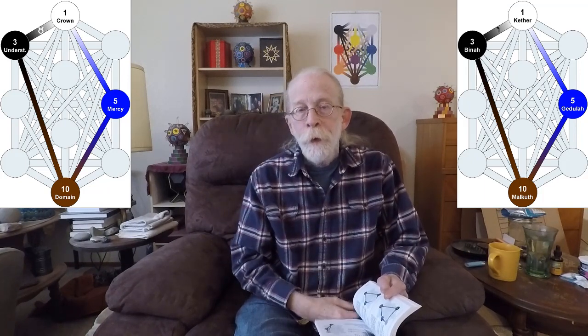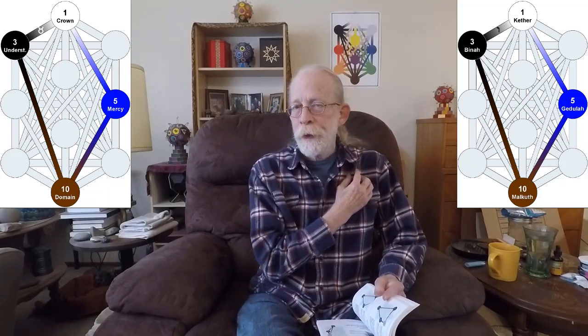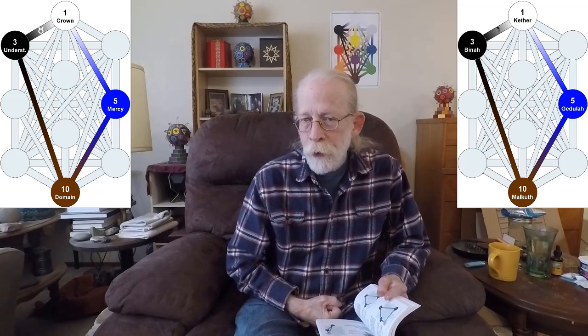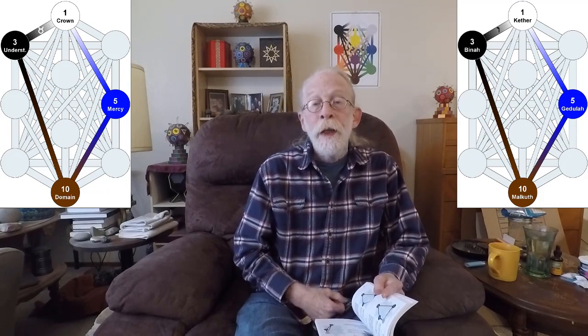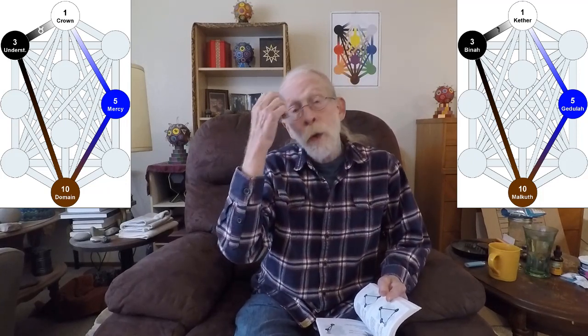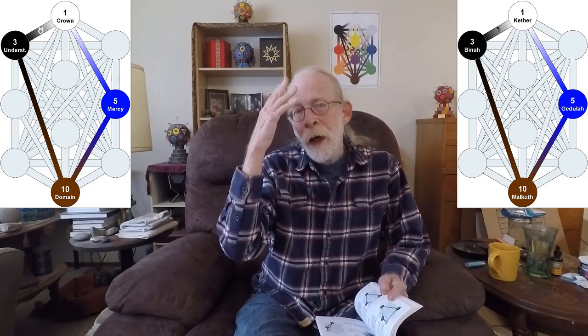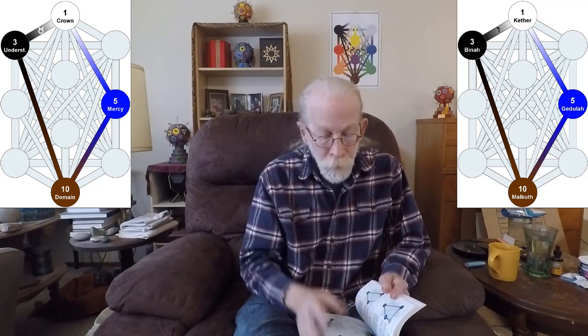And again, it puts this dynamic between the hidden path between Gedjula and Malkuth, hidden path between Bina and Malkuth. It places it in context with Taurus, Vav, and Kether.